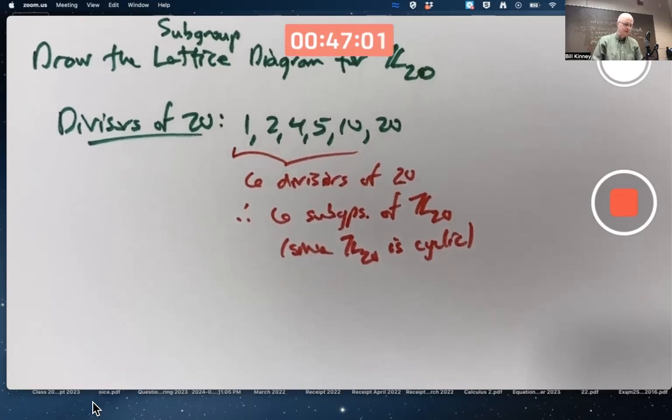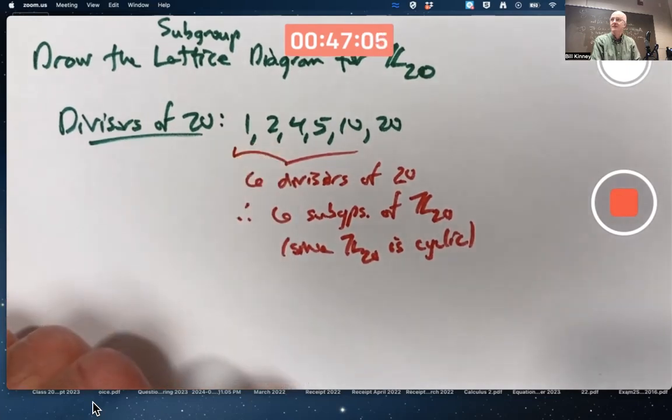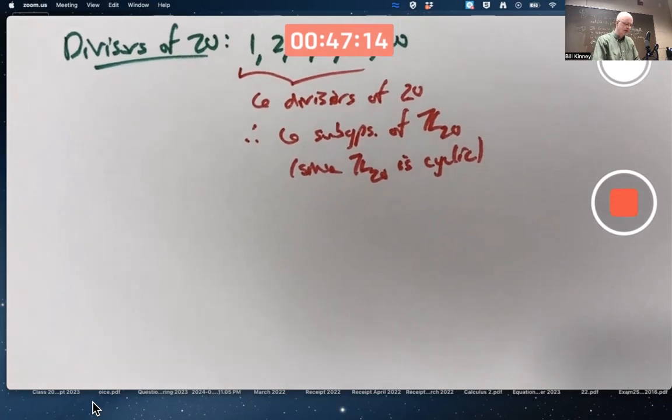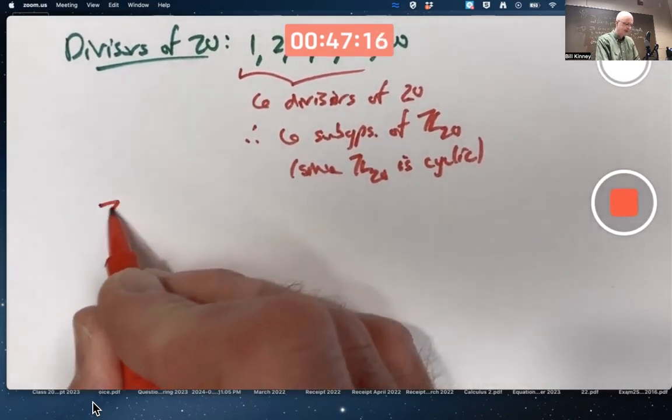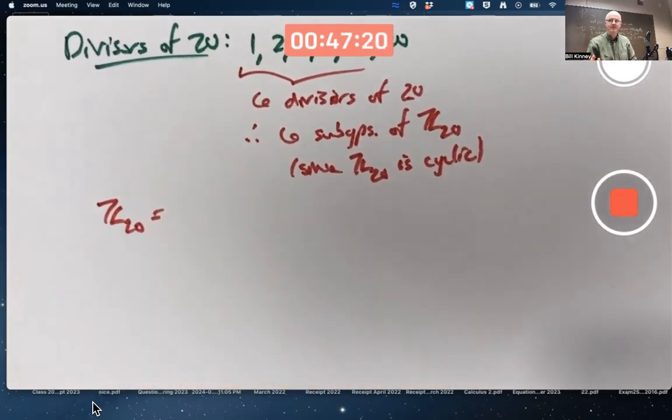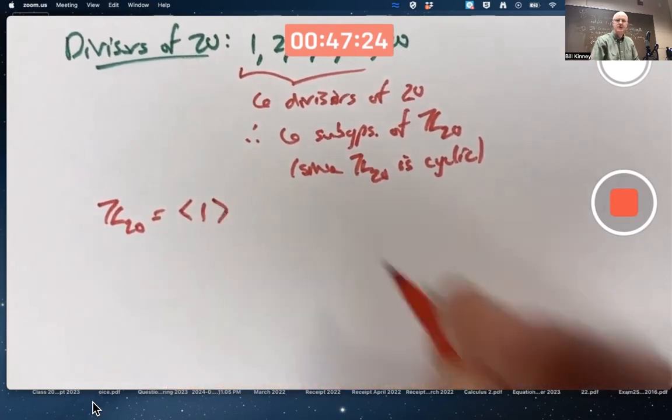You're going to have a subgroup of order 10, order 5, order 4, and order 2 as well. Before we try to make the diagram, maybe we should list what those are. So you got Z20 itself, this is not the diagram yet.